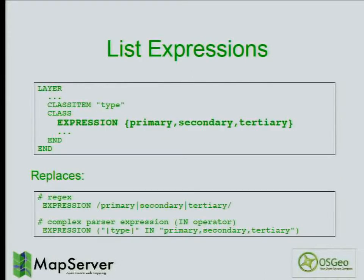Another feature added in 6.4 is support for list expressions. In the past, if you needed to match three values to a given class, you had to use a regular expression or a logical expression — both had more overhead in writing them and in processing time. Now you can have an expression with curly braces and simply list the possible values, which is almost as optimal as using constant string comparisons.